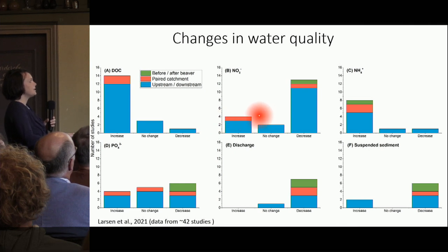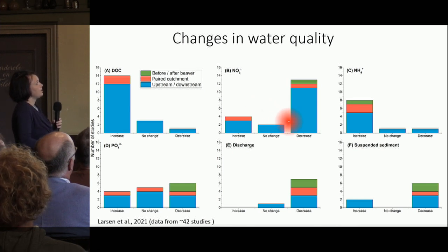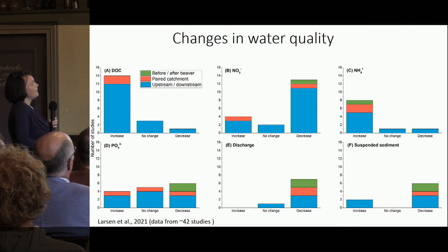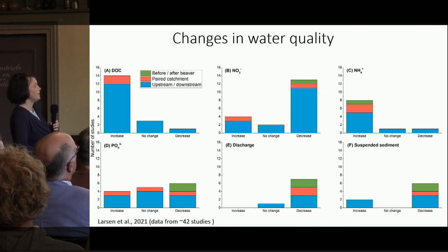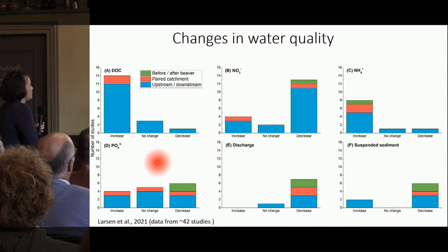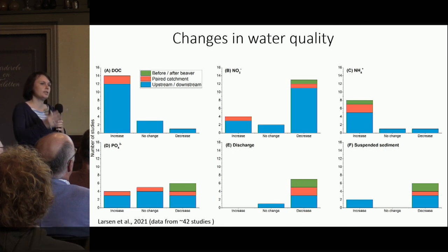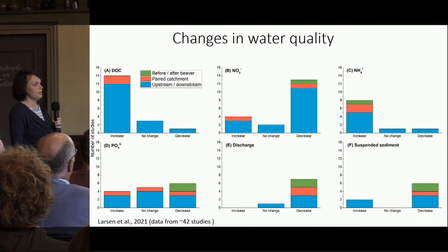A less coherent but still very clear trend is nitrate. We find definitely in almost all beaver ponds around the world a decrease in nitrate content in the water downstream of beaver meadows and beaver cascades. Ammonium seems to show an increase, which is the opposite. And phosphate — nobody knows what phosphate does. We definitely have a decrease in discharge downstream, probably due to groundwater infiltration and evaporation in beaver ponds, and definitely a decrease in suspended sediment, which is somewhat associated with the nitrate reduction.